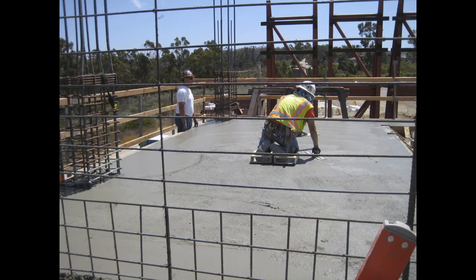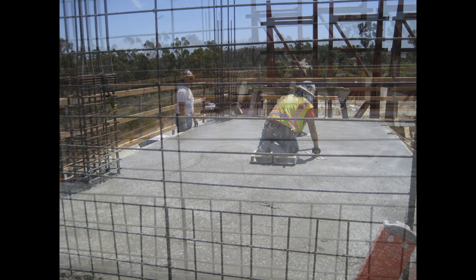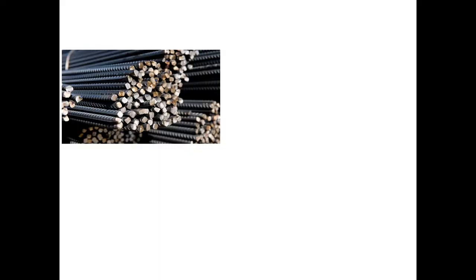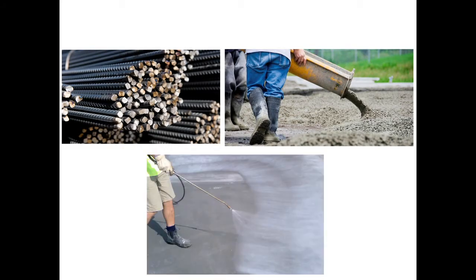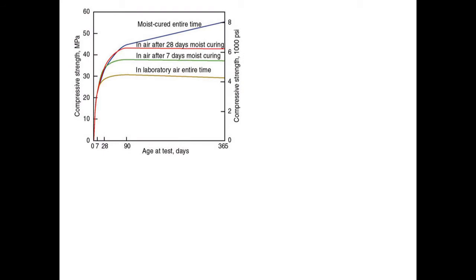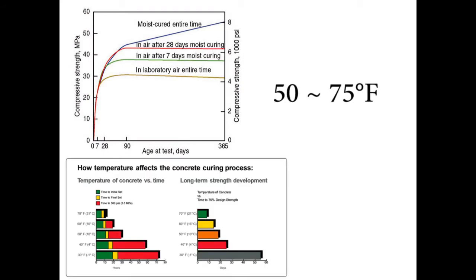Moreover, following the placement of wet concrete, it hardens — a process termed curing — and undergoes thermal expansion. Steel experiences similar thermal expansion rates, and therefore the potential for buildup of internal stresses at the interface between these two materials is minimized. A satisfactory moisture content and temperature, preferably between 50 and 75 degrees Fahrenheit, must be maintained during the concrete curing process for quality concrete.